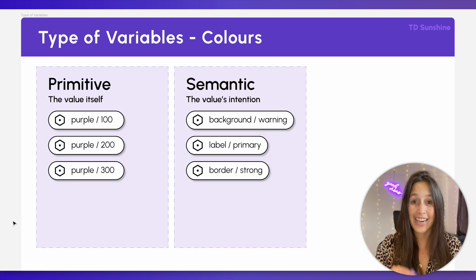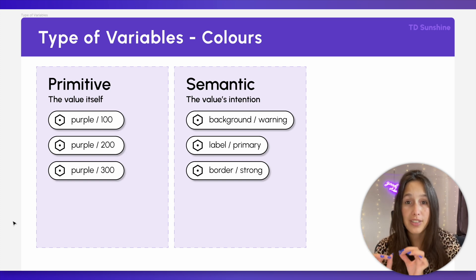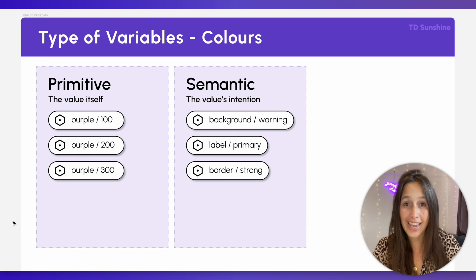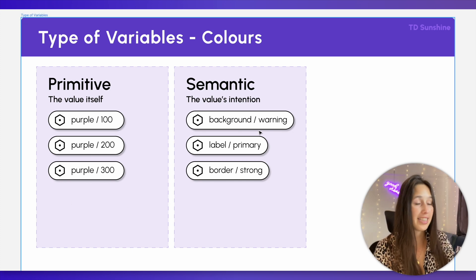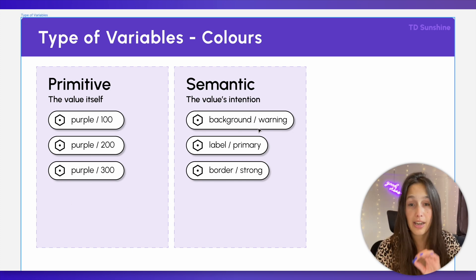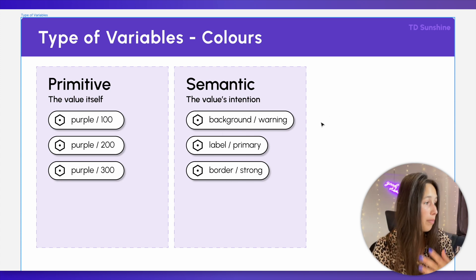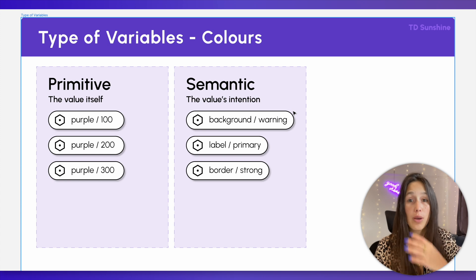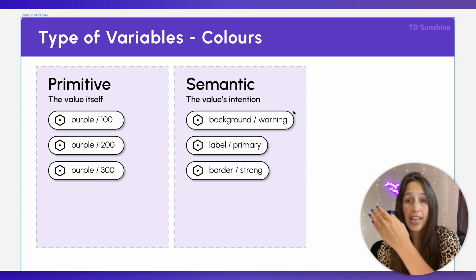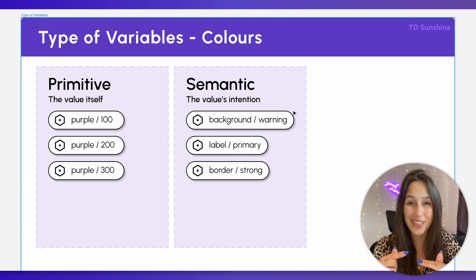Then we will add a second collection called semantic. The semantic collection will reference colors from the primitives, and these are called aliases. So for example, in semantic I will have a variable called 'background warning' and the value for that will be purple 200 — so I'm referencing a color variable I've already created in primitives. We will do this in a second so you can see it happen live.